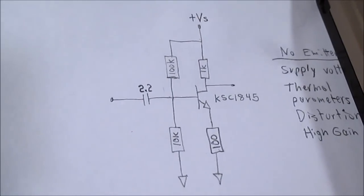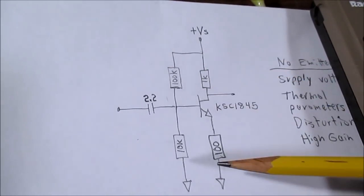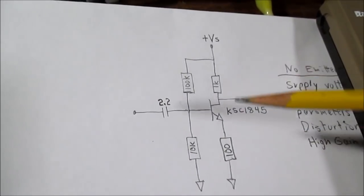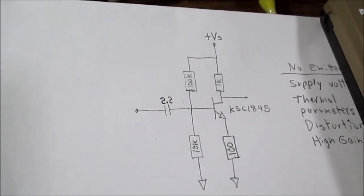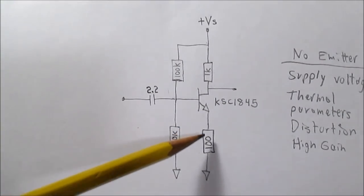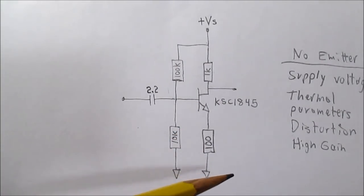So we gave up a whole bunch of gain for a vast improvement in everything else. So in this arrangement, the gain is going to be roughly the ratio of these two resistors, which is about 10 as we figured before.